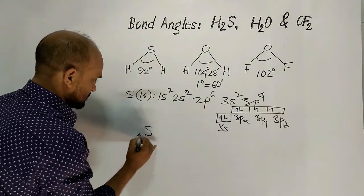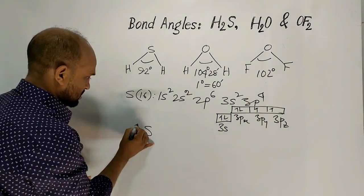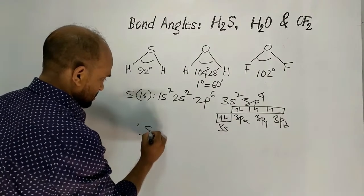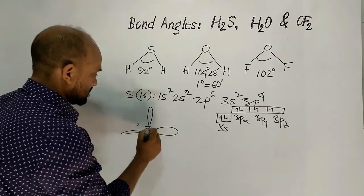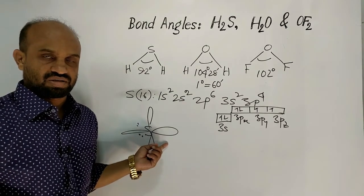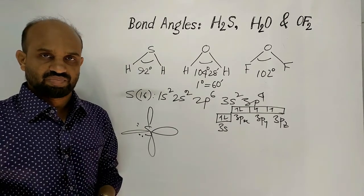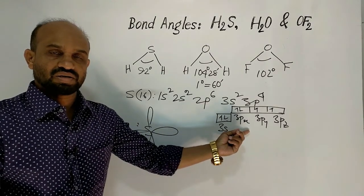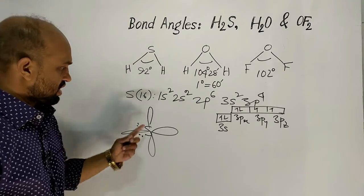In this way, sulfur has two paired electrons — one pair and another pair — and two p orbitals. These p orbitals are unhybridized. That means in hydrogen sulfide, no hybridization happens. Among the s and p orbitals in the outermost shell of sulfur, no hybridization occurs.